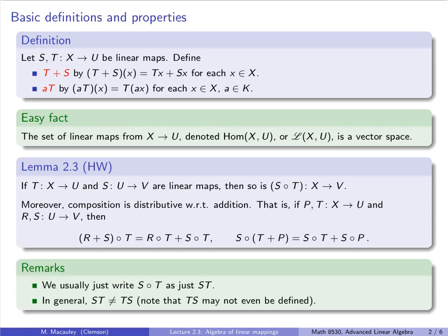Usually, instead of writing s of t, we just write s times t. If we think of these as linear maps, we should read them from right to left — doing t then s. In general, st is not equal to ts, and of course there are many cases when ts is not even defined, for example when the range and domain don't match up.